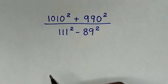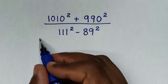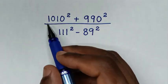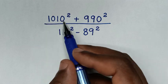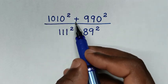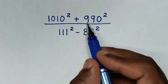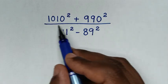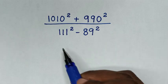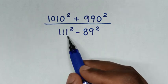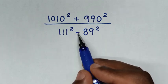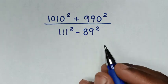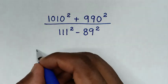Hello, you're welcome to solve this math problem, which is 1010 square plus 990 square over 111 square minus 89 square.